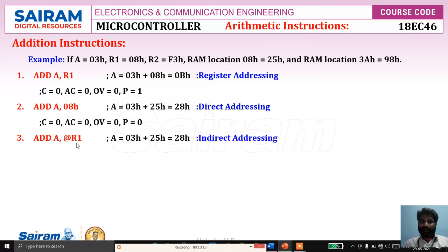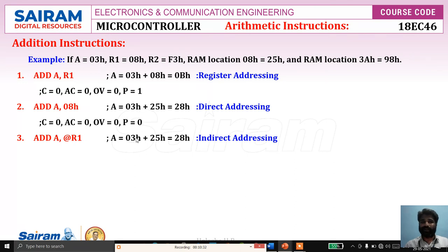For ADD A, @R1: this is indirect addressing mode. Content of the location pointed by R1 — R1 equals 08H, and location 08H contains 25H. So it performs addition of 25H plus content of A (03H), giving 28H. Same result as the previous instruction, so same flags: carry flag = 0, auxiliary carry = 0, overflow = 0, parity = 0.